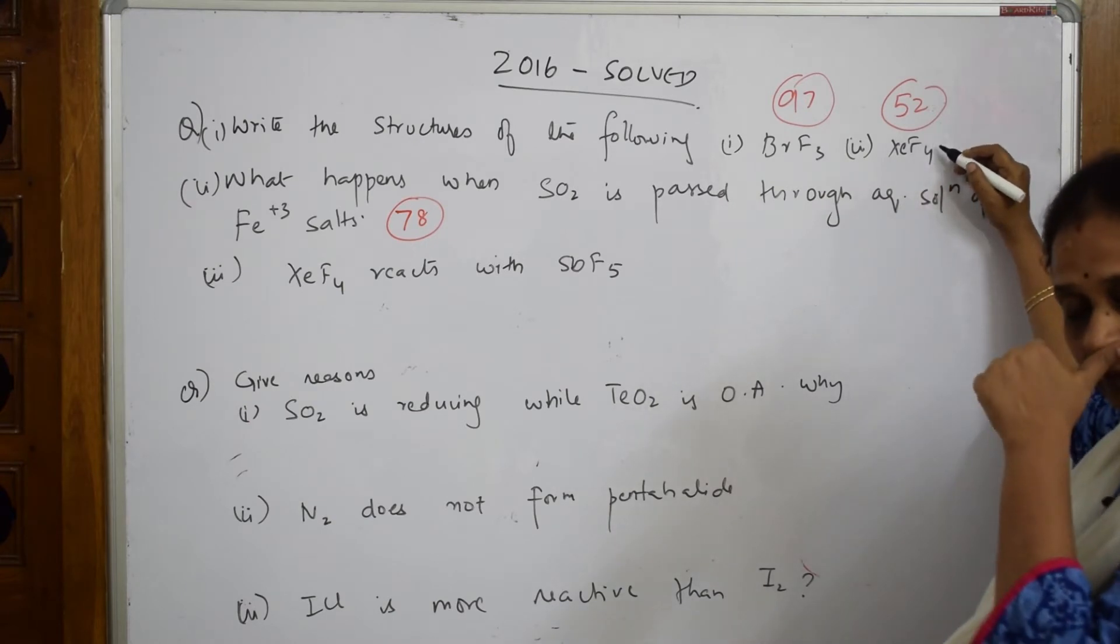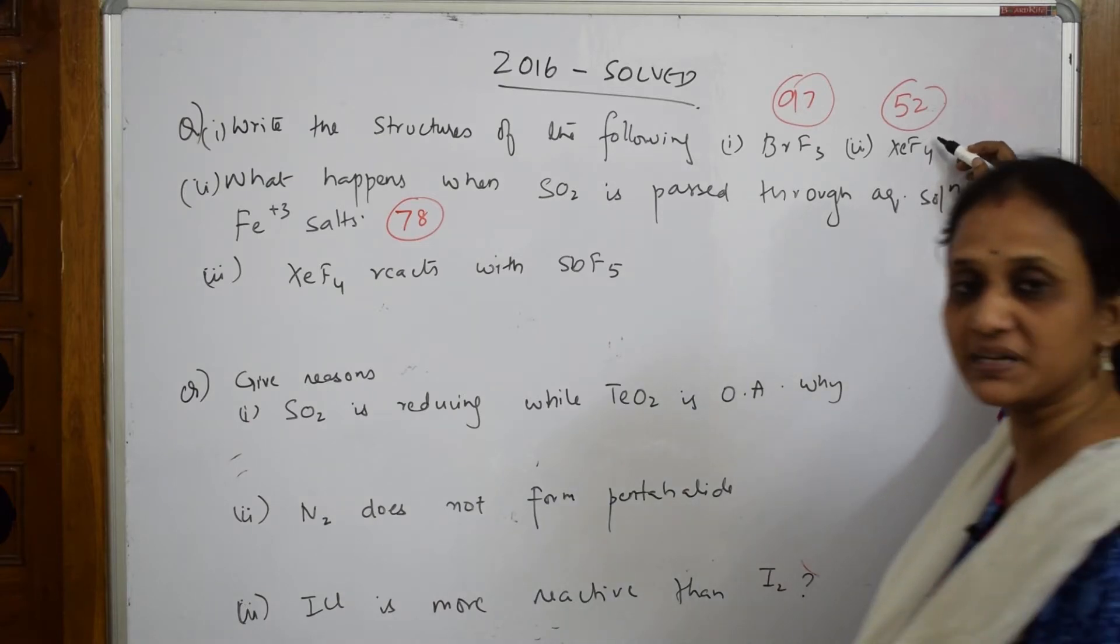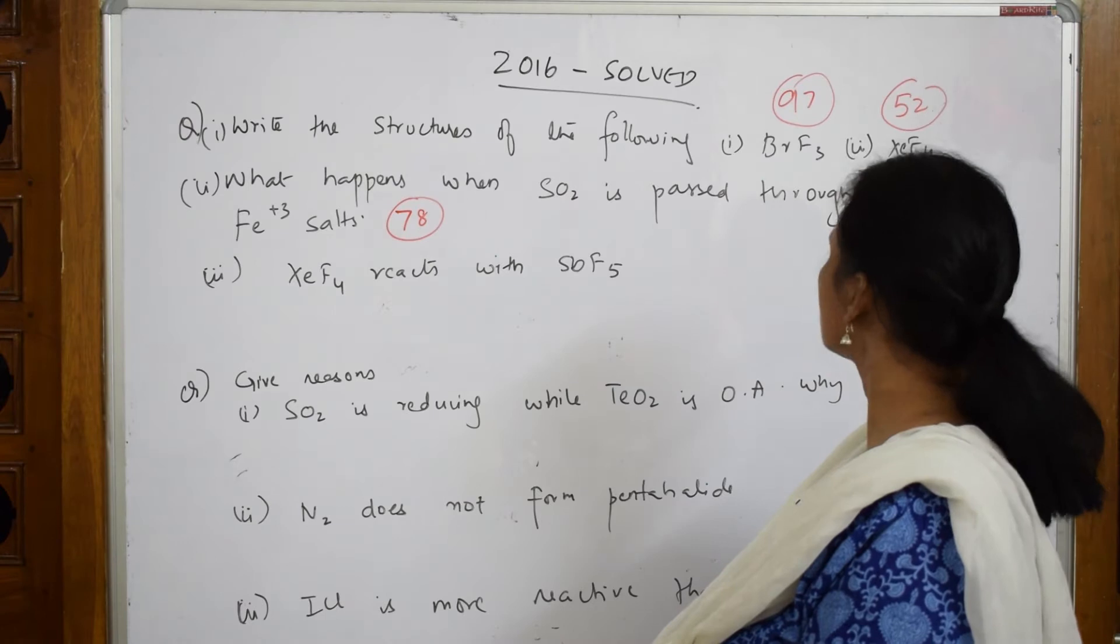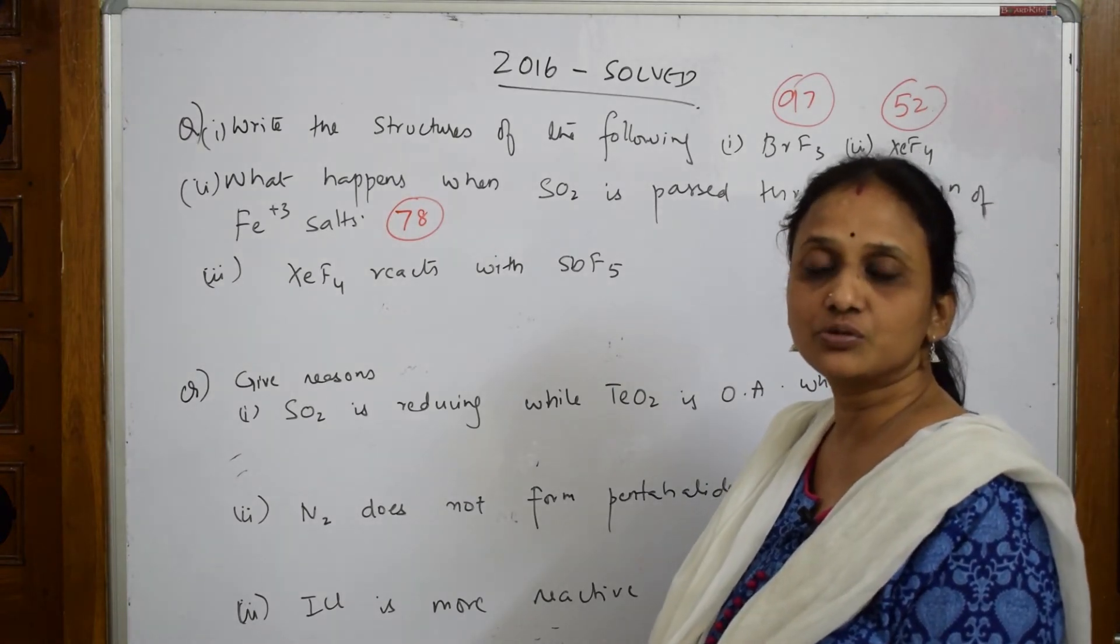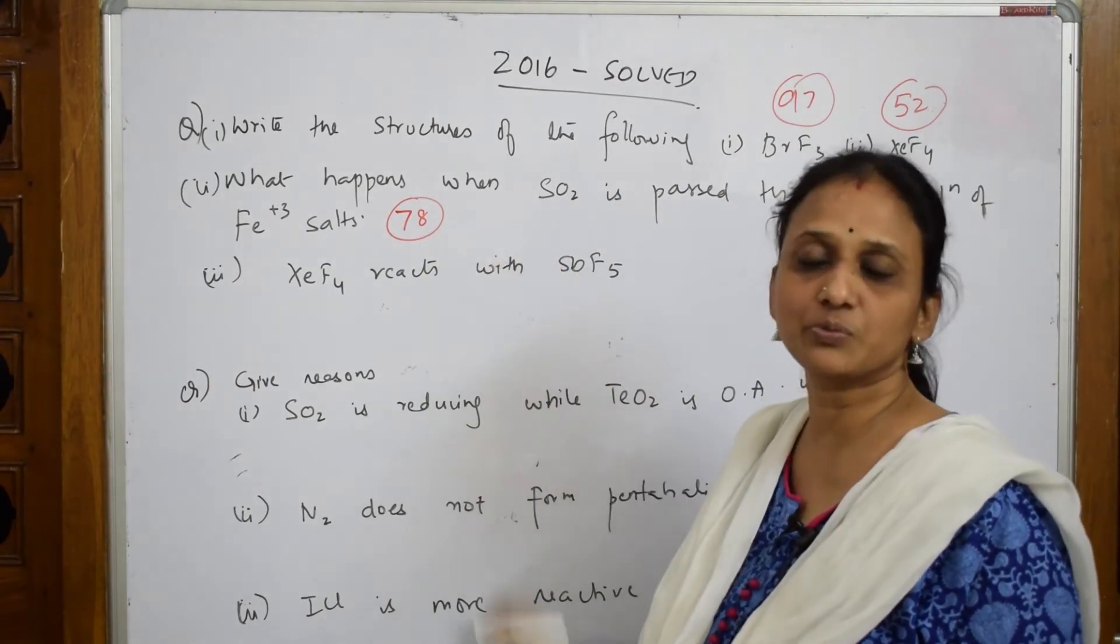I also did XeF4 structures in group 18 elements, video number 52. Please watch the playlist. We have one more question: what happens when SO2 is passed through aqueous solution of Fe+3? I've taught you the different oxidizing properties in video number 78, the oxidizing property of sulfur dioxide.